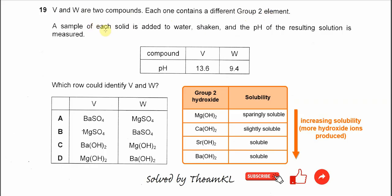A sample of each solid is added to water, shaken, and the pH of the resulting solution is measured. Compound V will produce pH 13.8. Compound W will produce a solution with pH 9.4.